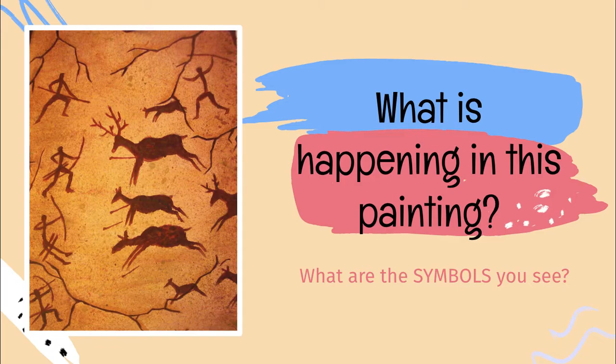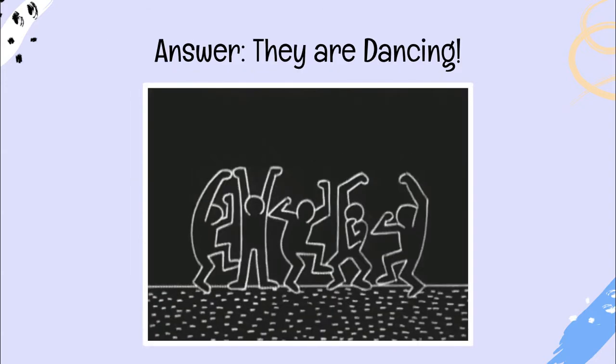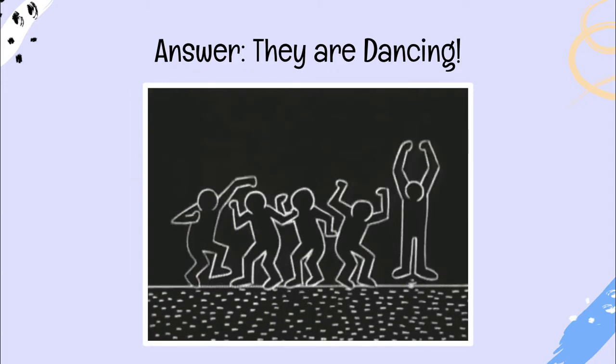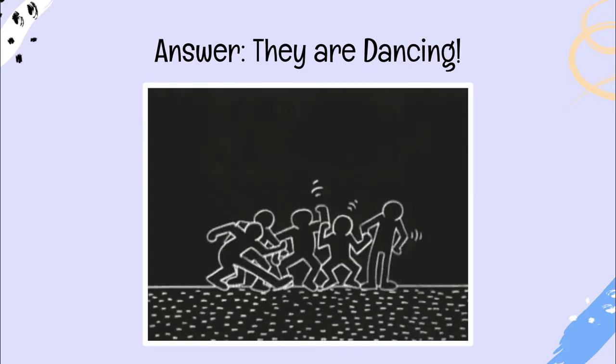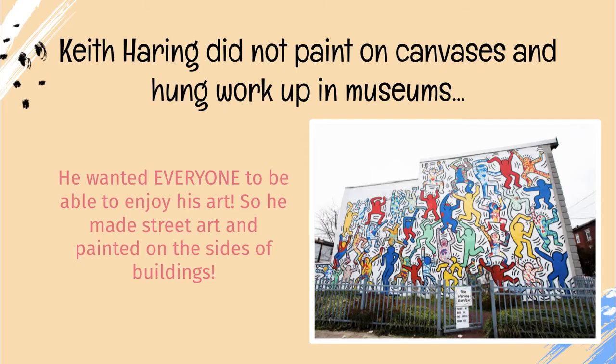So what do you think is happening in this painting? Does it tell a story? What symbols do you see? How do the symbols tell you what is happening? They're dancing — and here is an animated version of this picture.